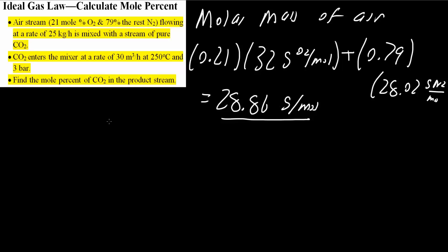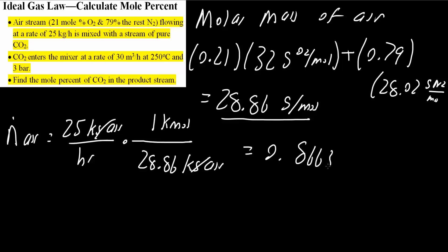Next, we need to calculate the molar flow rate of air. We have 25 kilograms of air per hour. We know that 28.86 kilograms of air per kilomole is the equivalence. 28.86 grams per mole is the same as 28.86 kilograms per kilomole. This gives us 0.8663 kilomole per hour. We will be needing to use this piece of information at the end of the problem.